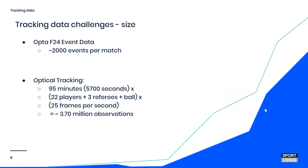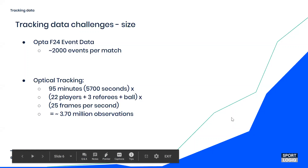One of the main challenges of tracking data is just the size of it. With an Opta event feed you're getting about 2,000 events per match — essentially 2,000 rows where each row is an event. But with a six-camera tracking system for a 95-minute game, with 26 tracks (22 players, three referees, plus the ball) sampled at 25 frames per second, you get 3.7 million observations per match. Going from 2,000 events to 3.7 million observations creates huge problems in terms of how to use the data, how to store it, and how to process it quickly.